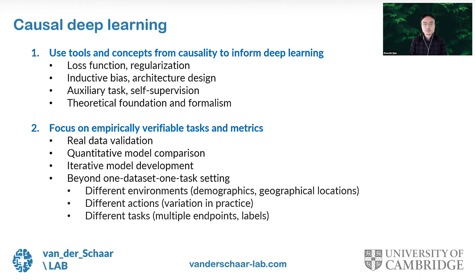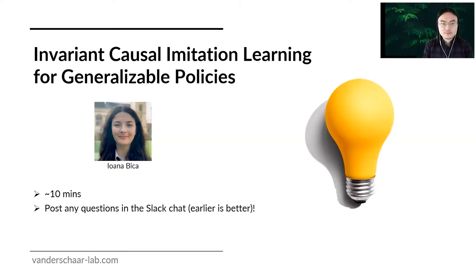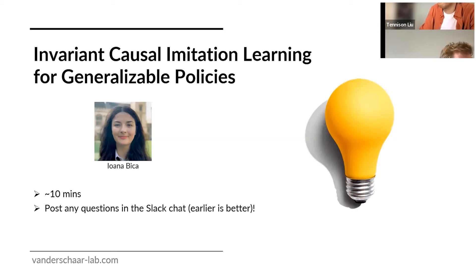The focus is on empirically verifiable tasks and metrics, enabling methods to be validated on real data rather than simulations. Quantitative model comparison allows for iterative model development beyond the traditional single-dataset, single-task setting to multiple environments, actions, and tasks. We now move on to two presentations on state-of-the-art methods in causal deep learning. The first is from Ioana Bica, a final-year PhD student from our lab, who will talk about invariant causal imitation learning for generalizable policies.